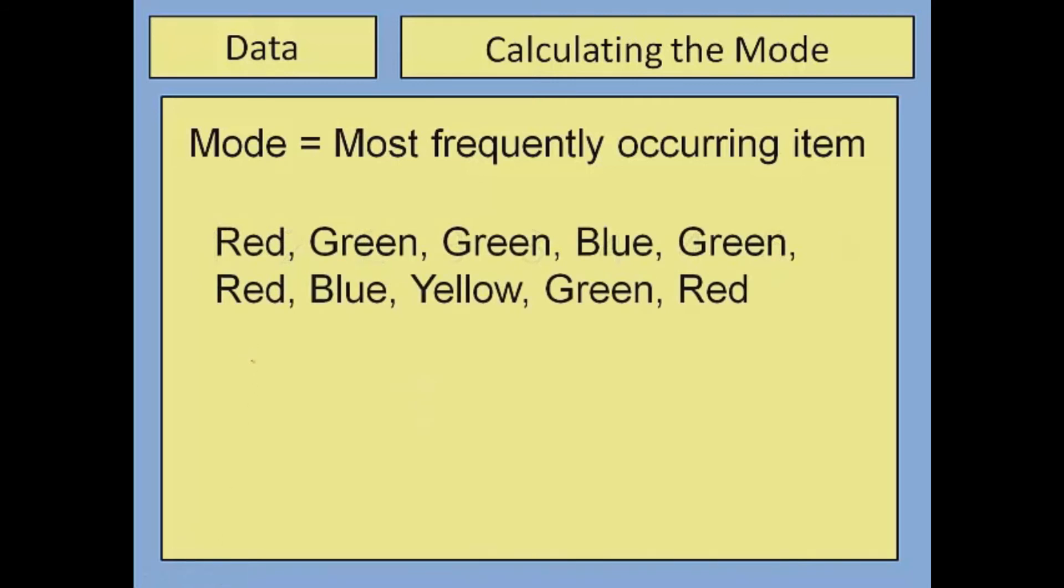Okay, our final example: the most frequently occurring item. Now this is what I said before—it doesn't have to necessarily be a number. So the color red occurs once, twice, three times. We've got green appearing once, twice, three, four times. Blue appears twice and yellow once. So actually the modal color from this set of data equals green because it was the most frequently occurring color.